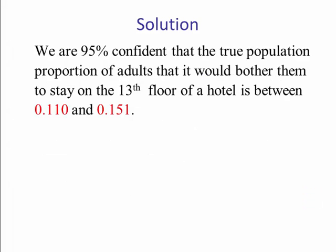Now if we interpret this, we would say we are 95% confident that the true population proportion of adults that it would bother them to stay on the 13th floor of a hotel is between 0.11 and 0.151.